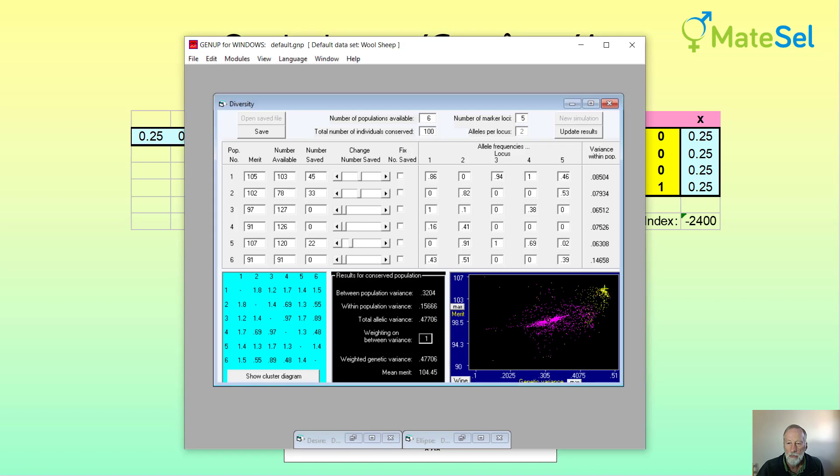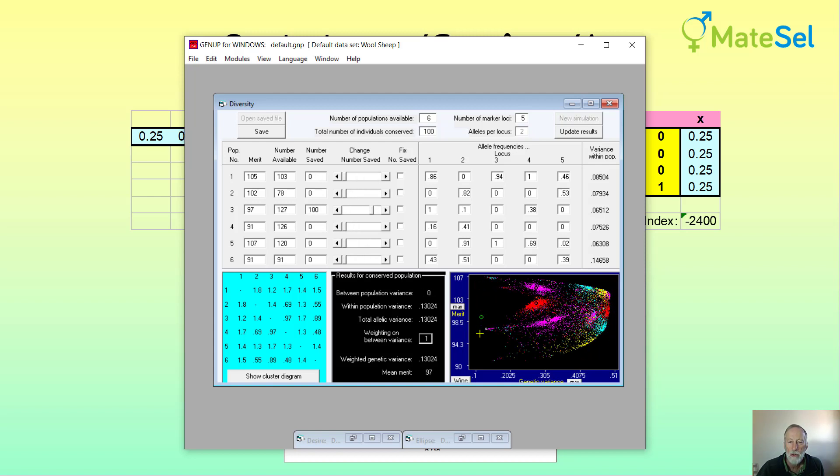The other thing is that by clicking in different places, I'm clicking saying I want to be here I want to be here we start to see the whole response surface for these two issues and for example back here with low genetic variance what we're looking at is selecting single populations so in this case population 4 gets all of the attention for the conservation program and if I click up here it's population 5 etc.